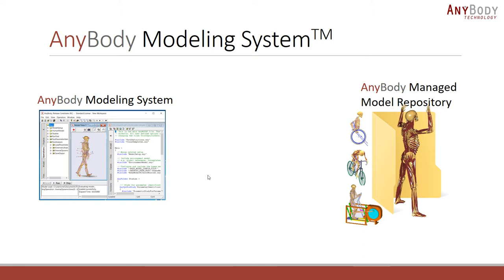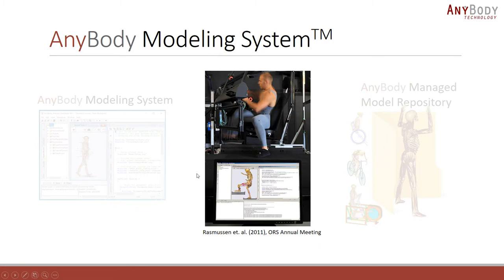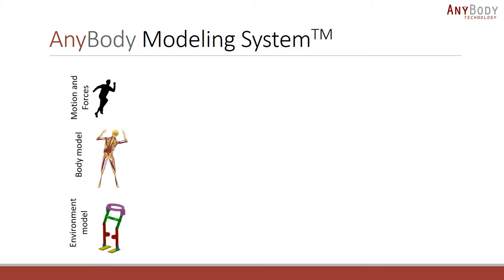For a typical study using AnyBody, you would combine both components. The three essential parts are the human body model, the motion and forces you want to subject it to, and optionally a model of the environment — such as when there is interaction between the human and a device or a fixed object that forms the motion environment.